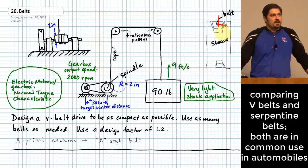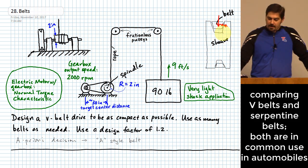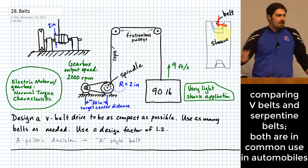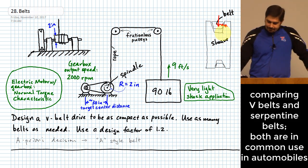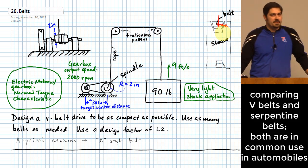Where have you seen belts like this transmitting power? The typical place most people have seen this before is maybe an alternator belt on a vehicle. Especially with an older car, this was the standard way of driving things like an alternator or a fan. It would have a sheave on the crankshaft, and the crankshaft would transmit power through the belt to those accessories.